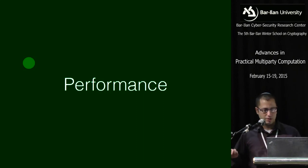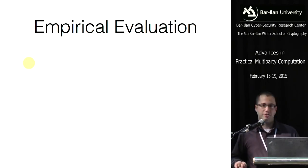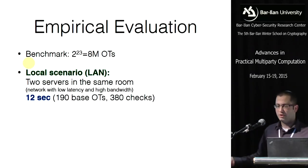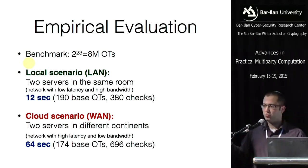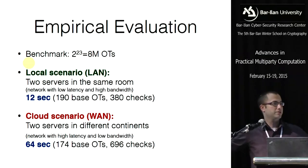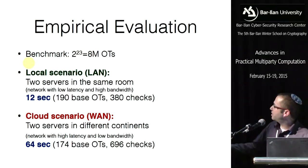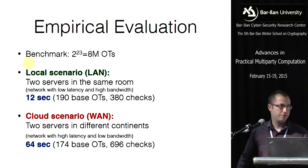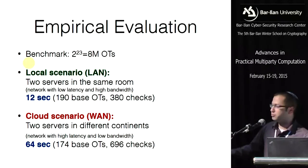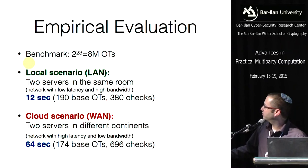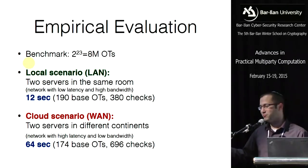Now for performance: we did an empirical evaluation benchmarking 8 million OTs. We tested a LAN scenario — two servers in the same room — and a WAN (cloud) scenario where servers are far apart, which requires different parameters since base OT costs may dominate over check costs depending on the setting. In the LAN scenario, 8 million OTs takes about 12 seconds; in the WAN scenario, about one minute.